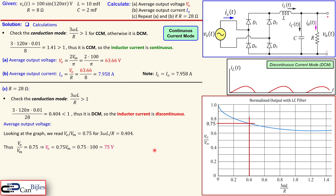For the average output current we use Ohm's law again: 75 V / 28 ohms = 2.678 amps, which is much smaller than the original 8-ohm situation.